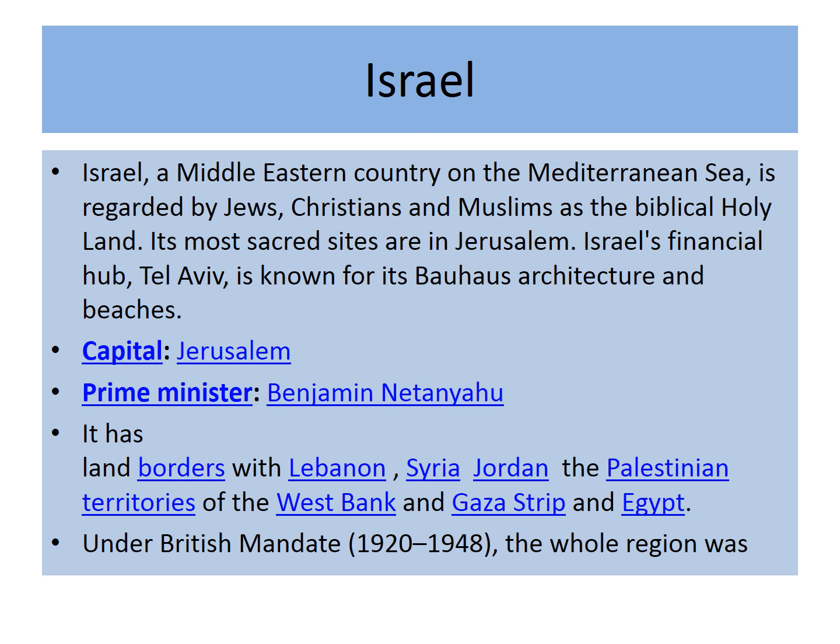Israel is bounded to the north by Lebanon, to the northeast by Syria, to the east and southeast by Jordan, to the southwest by Egypt and to the west by the Mediterranean Sea. Jerusalem is the seat of government and proclaimed capital. Prime Minister is Benjamin Netanyahu. Israel's most sacred sites are in Jerusalem, and it has lined borders with Lebanon, Syria, Jordan, the Palestinian territories of the West Bank and Gaza Strip, and Egypt.